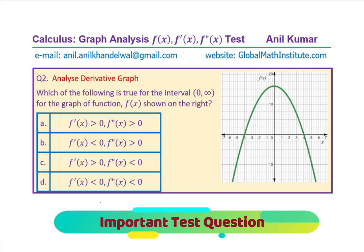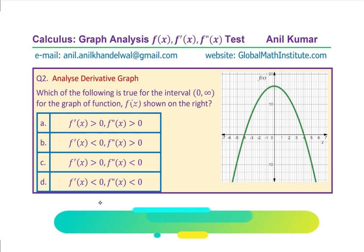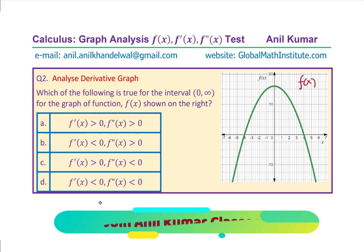Let us move on to the second question. We have three questions in total. This time we are going to analyze the graph of the function itself. Which of the following is true for the interval 0 to infinity for the graph of function f(x) shown on the right? We are given the graph of f(x) and four answer choices. We need to figure out which option is true for that interval — it is a multiple choice question.